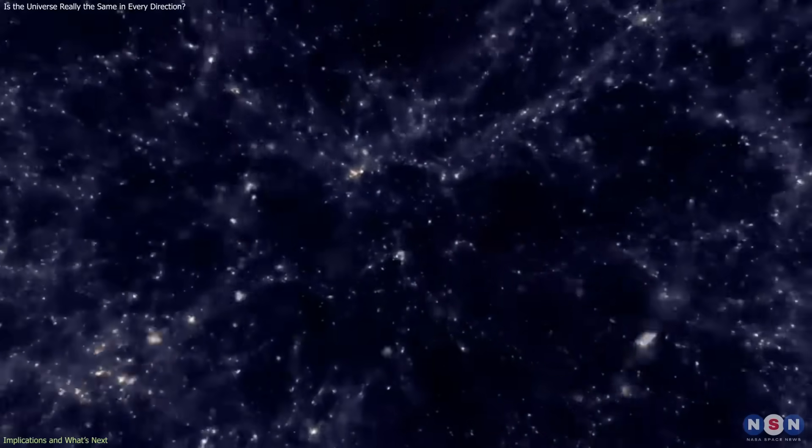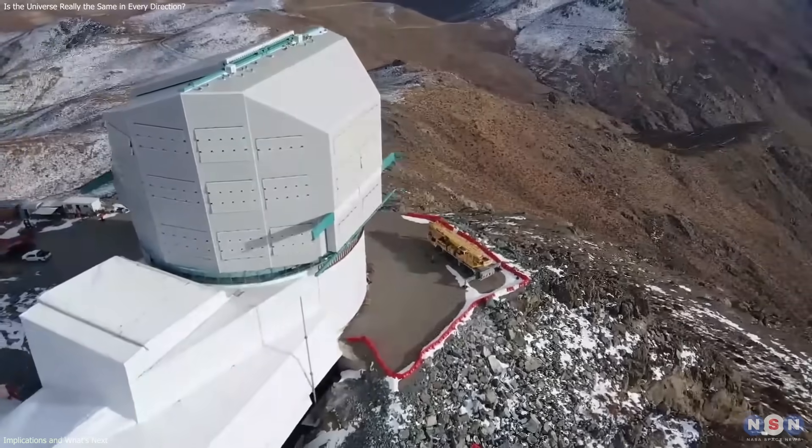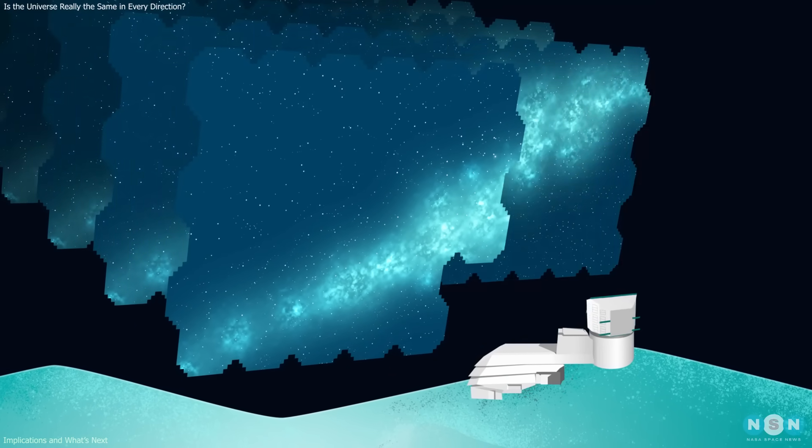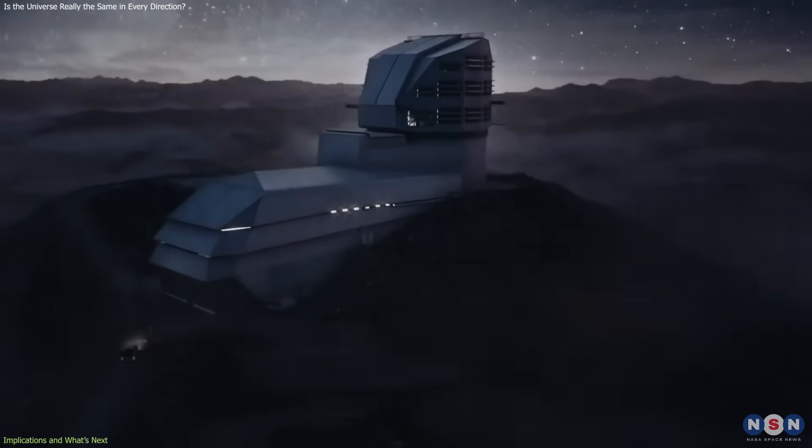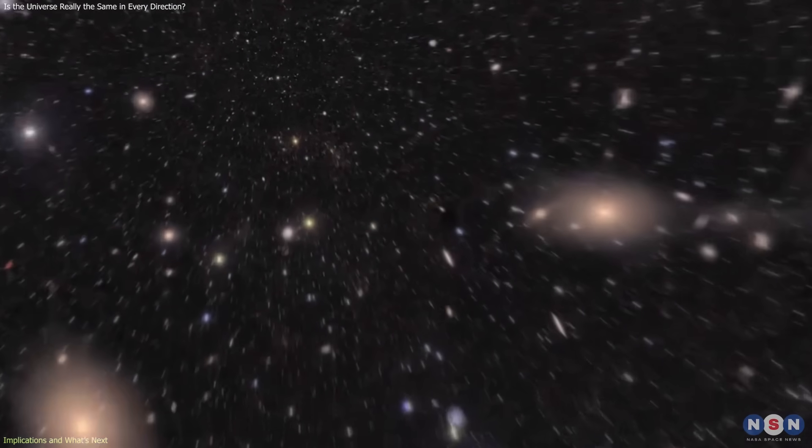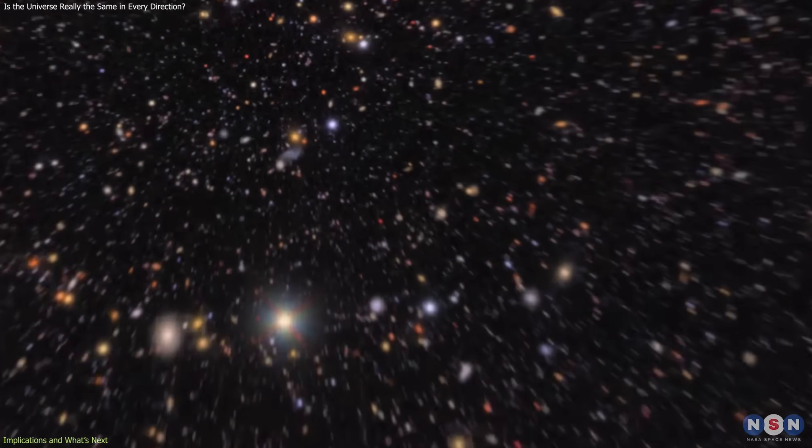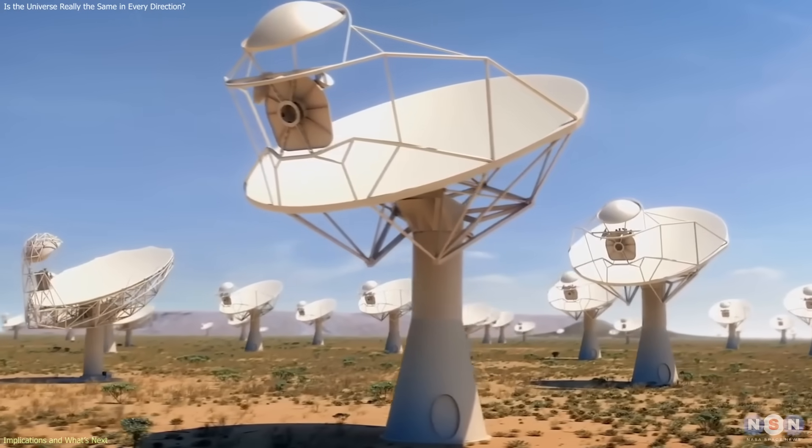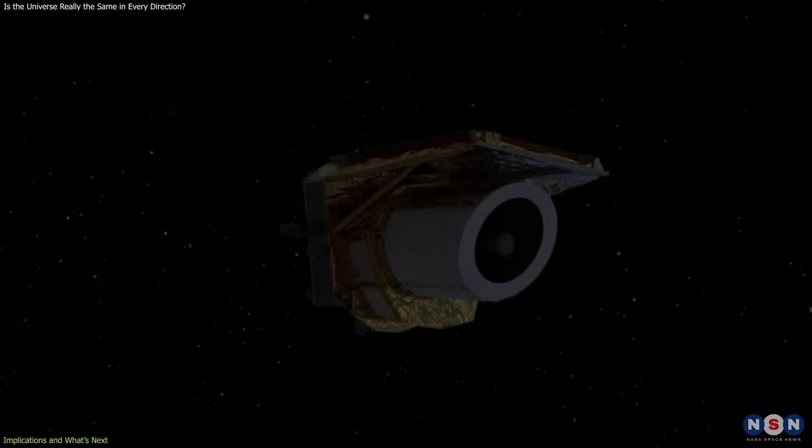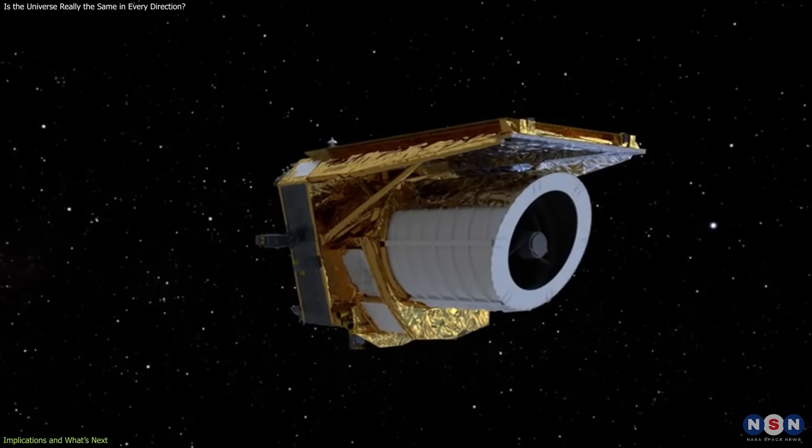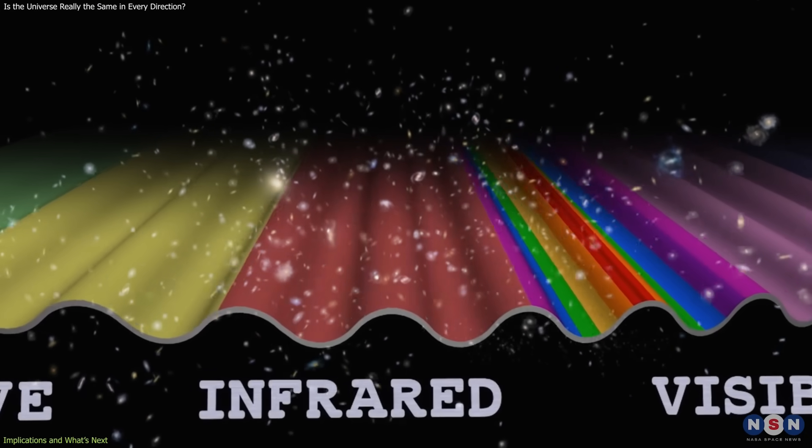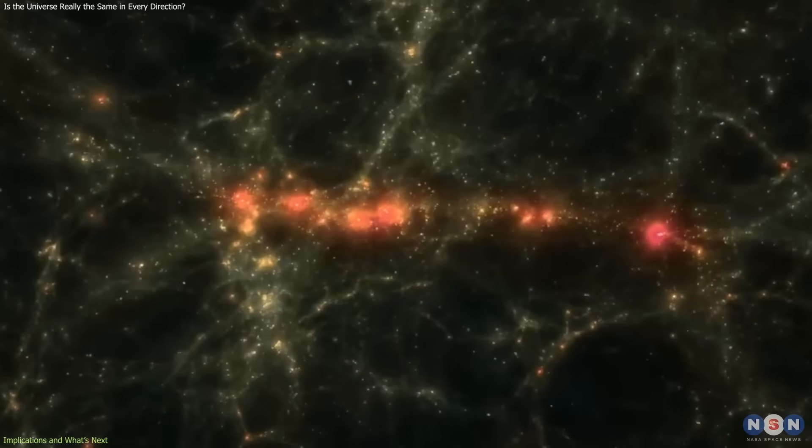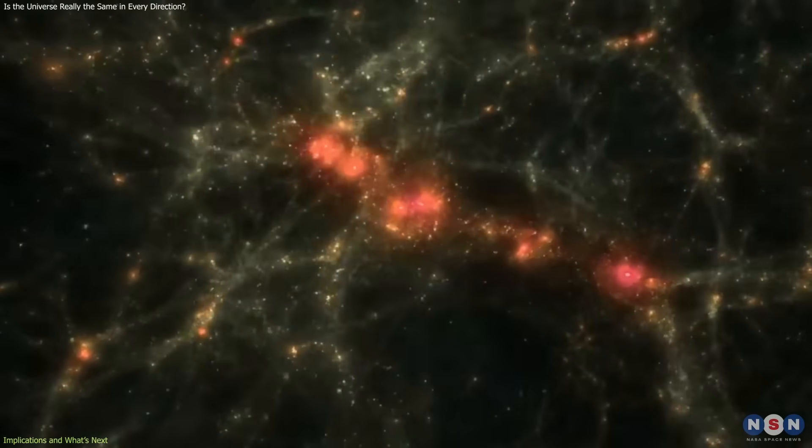At the same time, the field is entering a period where much stronger tests are possible. A new generation of observatories is about to deliver data with unprecedented precision and coverage. The Vera Rubin Observatory will map billions of galaxies across much of the observable sky. The square kilometer array will trace cosmic structure through radio observations, with unmatched sensitivity. Space missions, such as Euclid and Spheerex, will provide complementary data across different wavelengths.